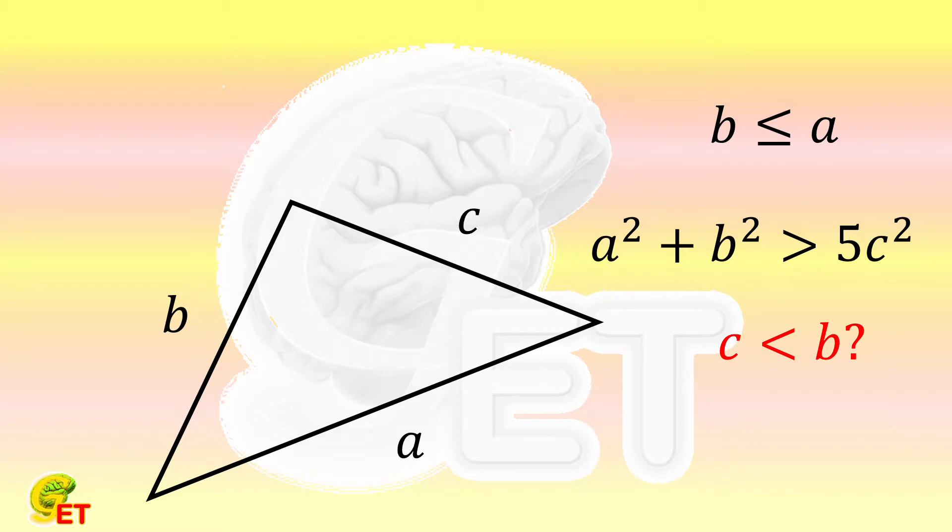Regarding how to choose three sides to fit into this conclusion. Since we have assumed that B is not longer than A, and the goal is to prove C is the shortest. We choose the summation of B and C to be greater than A, and the difference of A and B to be smaller than C.